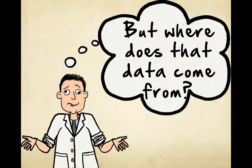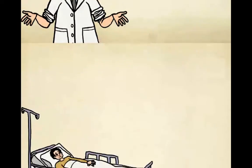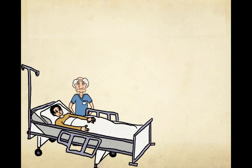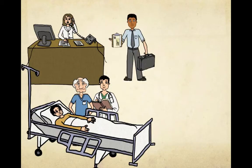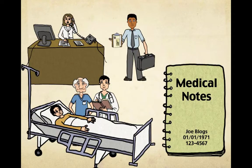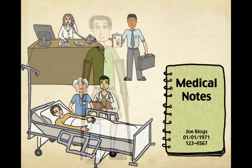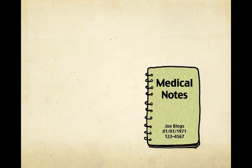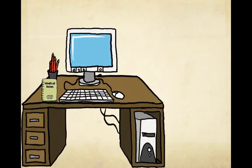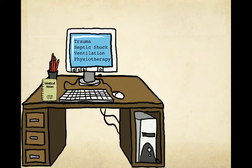But where does all that data come from? When teams see a patient on ward round, are seen by after-hours juniors, or seen by other teams as consults, all this information is collected into the medical notes. Once a patient is discharged, the patient notes are sent to the medical record department for clinical coding, which allows all their diagnoses, procedures, comorbidities, and any other complications to be captured.